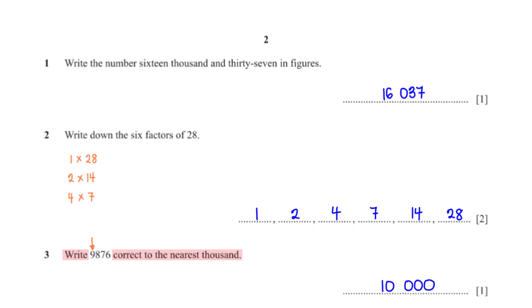Write 9876 correct to the nearest thousand. The number in the thousands position is 9. The number after 9, which is 8, is greater than 5, so we add 1 to 9 giving us 10. The numbers after 9 become 0, so we have 10000 rounded to the nearest thousand.